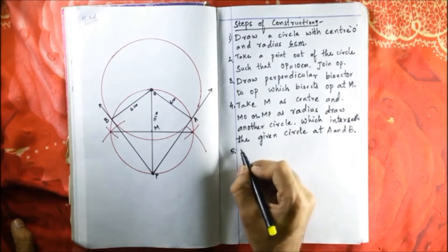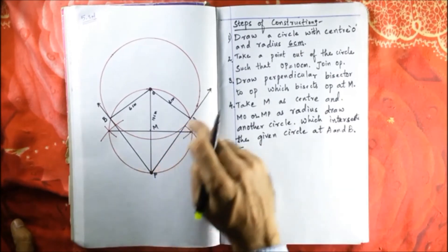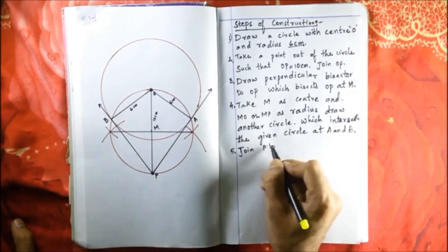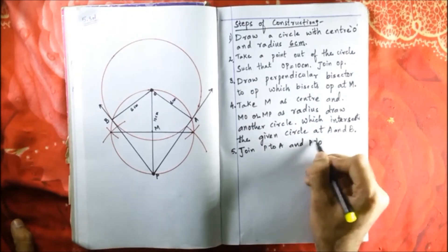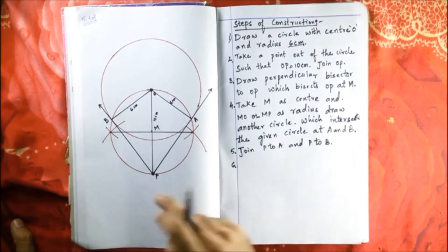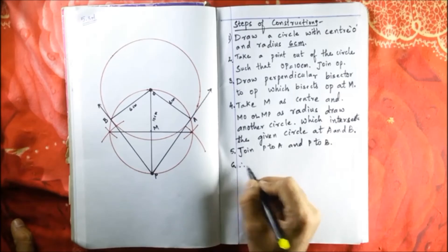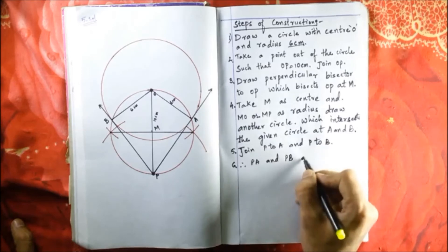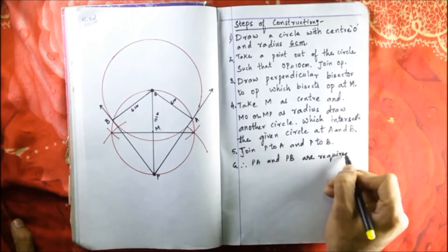Step 6: Join P to A and P to B. Therefore, PA and PB are the required tangents.